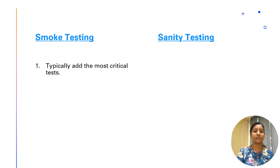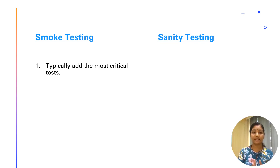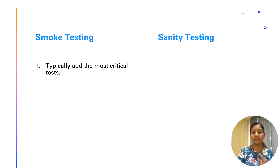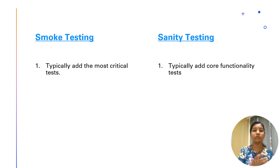What exactly is the difference between smoke testing and sanity testing? In smoke testing, we add the most critical test cases — like whether the application is launching, opening, and loading properly. Inside sanity testing, we typically add core functionality tests — what exactly the functionality of that module or feature is that we have to check.